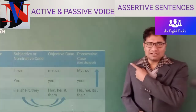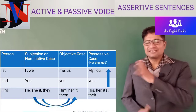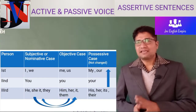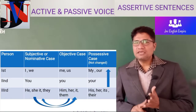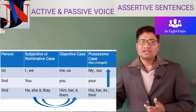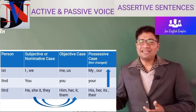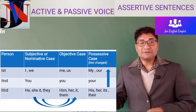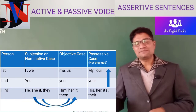Let's see the chart of cases. In this chart you can see: I, we, me, us, my — or you, you, your — he, she, they — and their objective cases and subjective cases are given.